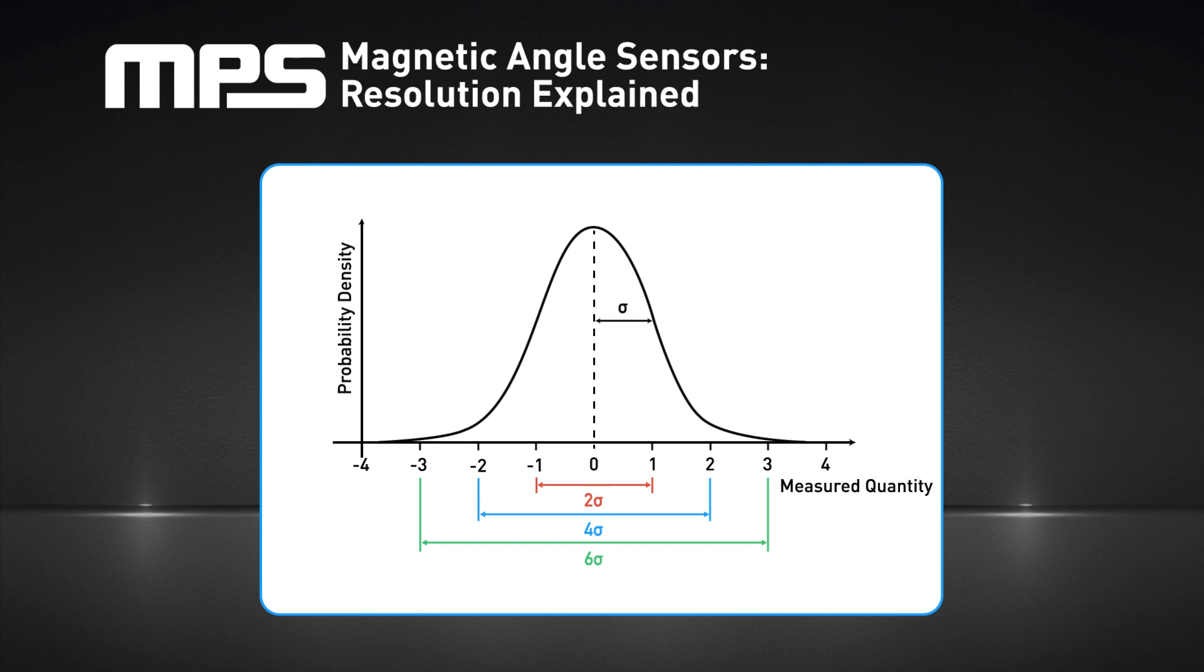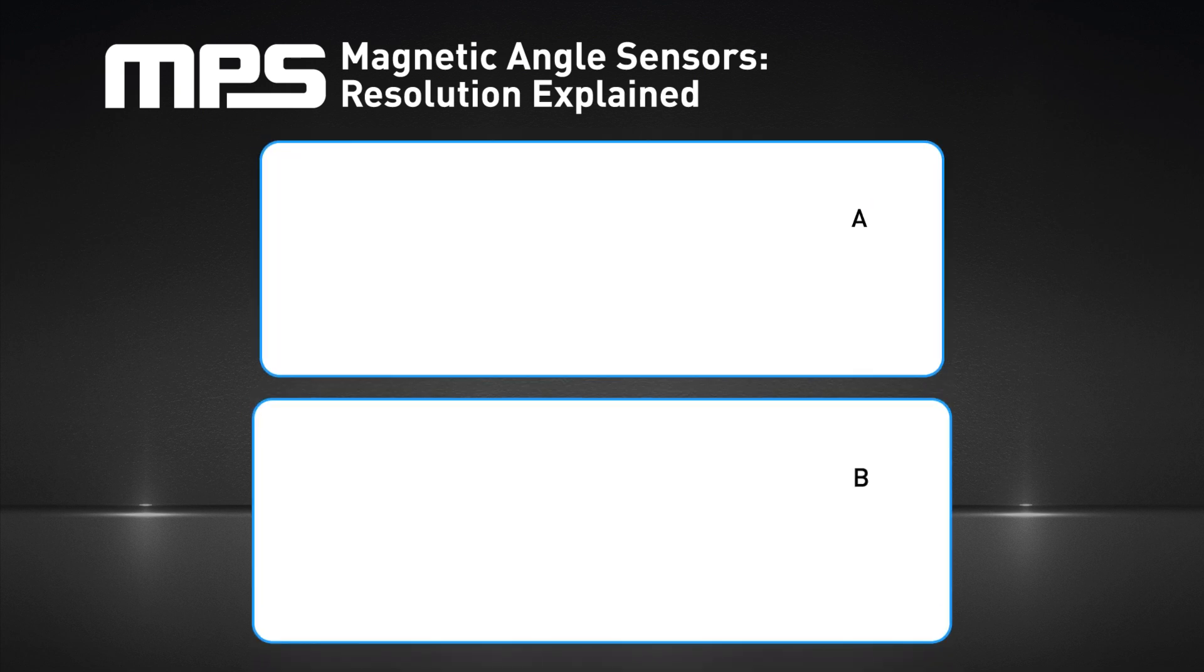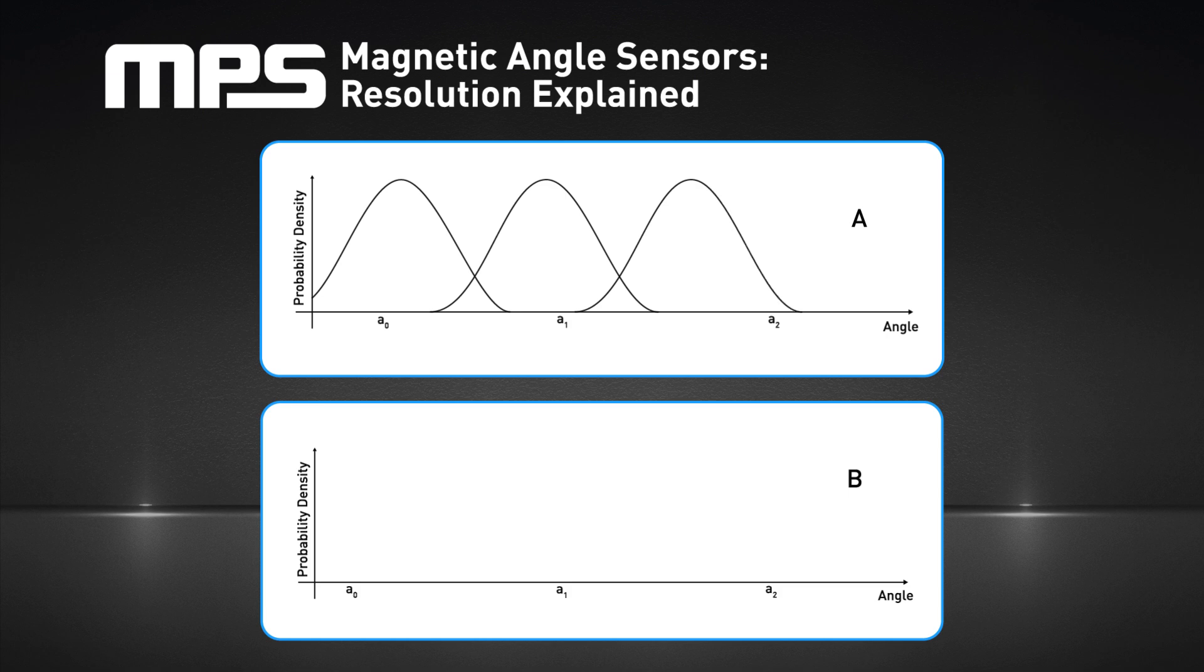Sets of measurements often follow a bell-shaped curve distribution, also called a Gaussian or normal curve. This is the case when the random variation does not depend on the past error. The Gaussian curve peaks at the measurement's average, and the standard deviation characterizes its width.